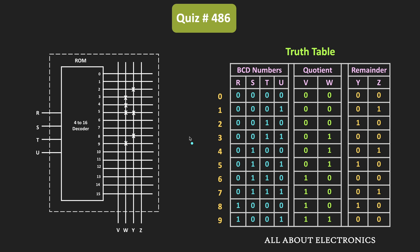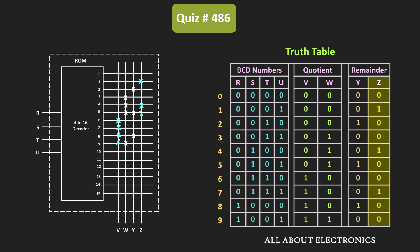Similarly, we can easily find the interconnections for outputs V and Z. This V is equal to 1 for inputs 6, 7, 8 and 9. That means we need to make the interconnections at 6, 7, 8 and 9. Likewise, the Z output is equal to 1 for inputs 1, 4 and 7. That means in the given ROM, we need to make the interconnections at 1, 4 and 7.